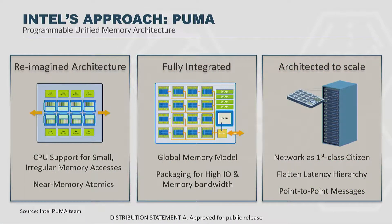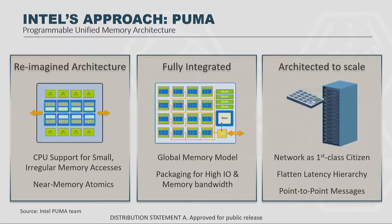To solve this, Intel has put together an architecture called Puma, reimagined from the chip level all the way up. At the fundamental level, it's a chip designed for small, irregular memory accesses across a globally unified memory space. The chip does not assume it has all the memory nearby, nor that all the data will come from adjacent addresses. If you blow apart those two basic assumptions and build an entirely different hardware architecture around small accesses to globally unified data — optimizing for latency, bandwidth, and throughput at every interconnect — you can conceive an entirely different architecture.